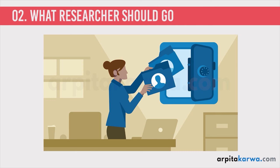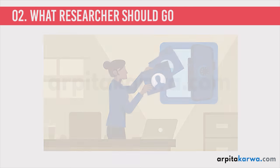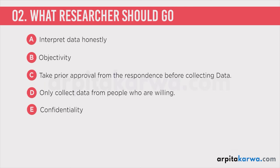Another important thing that you must remember in case of research ethics is authenticity. Authenticity means that when you have conducted research and you want to publish your paper, there are people who get the same paper published in two or three journals. This is not authentic because what is happening? Duplication of data.